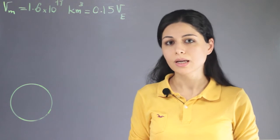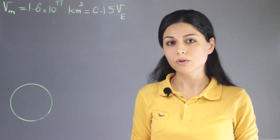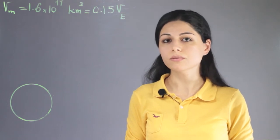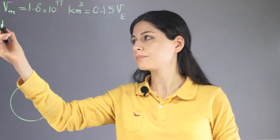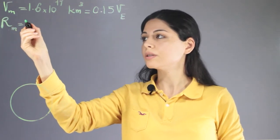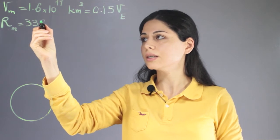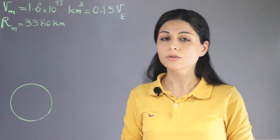Then, using the formula of the volume for any general sphere, we can find the volume of Mars. The radius of Mars is approximately equal to 3,380 kilometers.